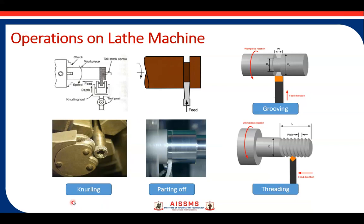The next operation is knurling. It is for producing a diamond-type surface finish on the cylindrical workpiece. Two helical gears form the knurling tool used for this operation. Feed is given perpendicular as well as along the length of the workpiece so that it traces and creates the diamond-type surface finish along the workpiece.